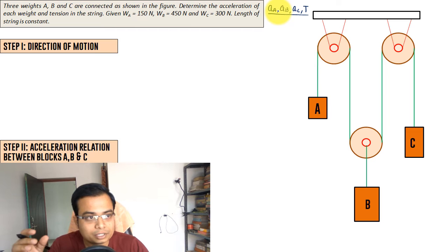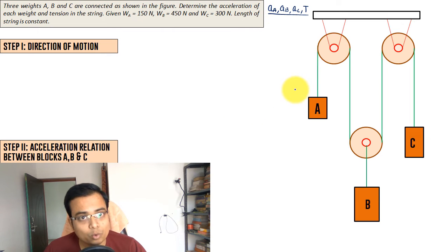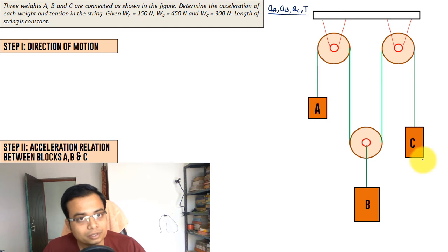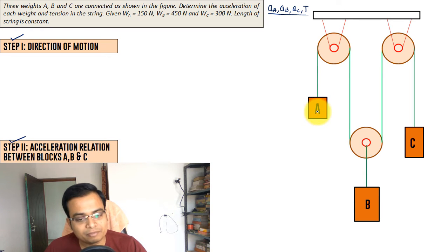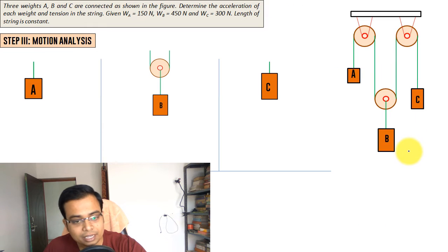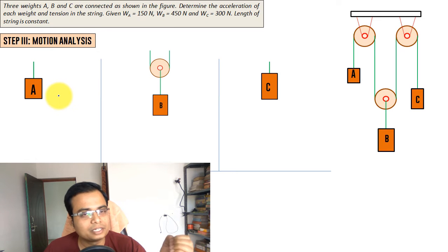The entire solution has been divided into three basic steps. In step one, we'll determine the direction of motion — whether block A goes down or up, whether block C goes up or down. In step two, we'll develop a relationship in terms of acceleration and velocity between all three blocks A, B, and C. In step three, we'll do individual motion analysis and frame equations using Newton's second law.